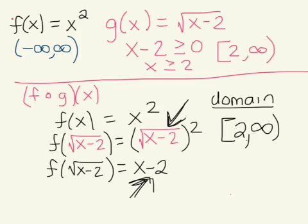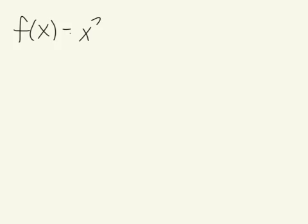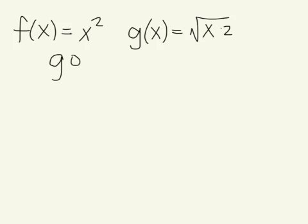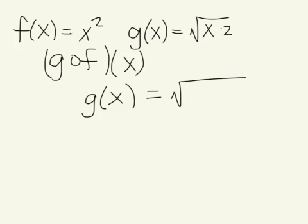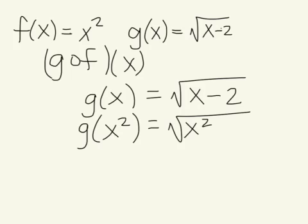For the next problem, we're still working with the same functions: f(x) = x² and g(x) = √(x-2). But now we're finding the reverse — we're finding g of f of x. Whatever letter comes first, that's what we write down first. So g(x) = √(x-2), and what we're substituting in is the second function. So everywhere there's an x, we take it out and replace it with x².